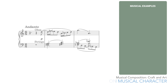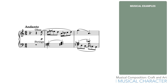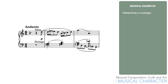Let's take this example. As it is here, most people would find this melancholy or nostalgic. The quiet, singing oboe line accompanied by soft legato strings evokes a kind of gentle sadness. The andante tempo also contributes to the mood.